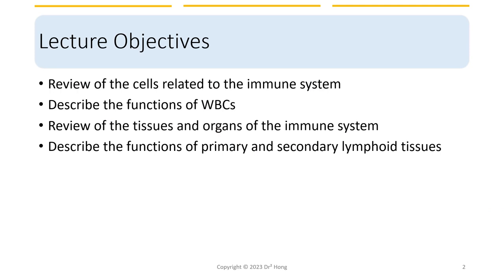Here are the lecture objectives. We will review the cells related to the immune system, describe the functions of all these white blood cells, and review the tissues and organs in the immune system, and describe the functions of primary and secondary lymphoid tissues.